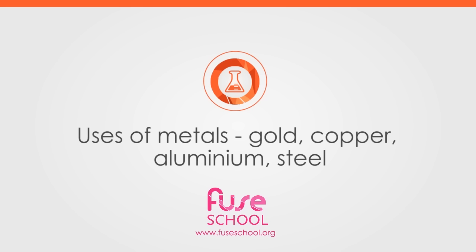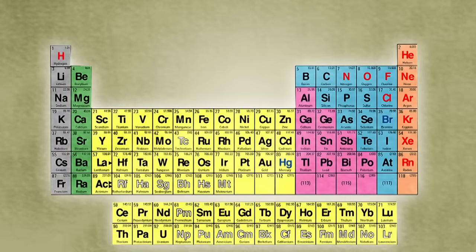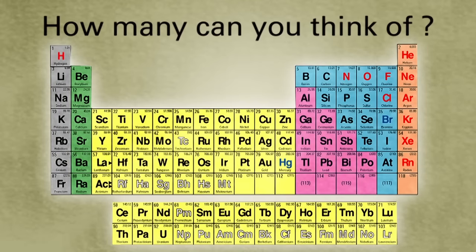In this video, you're going to examine the uses of metals. The periodic table of elements has 91 pure metals in it. How many can you think of?